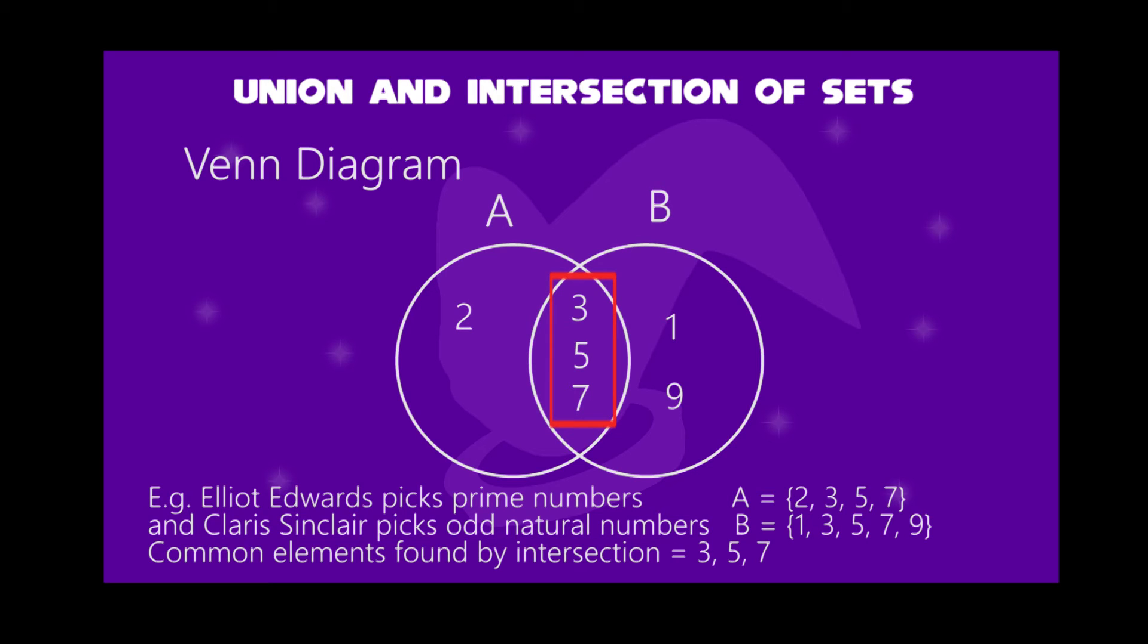The intersecting area will contain three elements: 3, 5, and 7. You can make three circles for any other example.